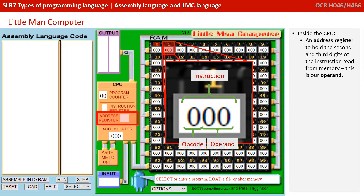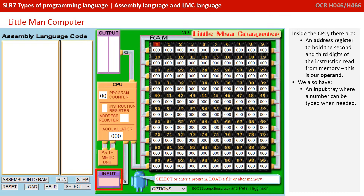An address register to hold the second and third digits of the instruction read from memory — this is our operand. We also have an input tray where a number can be typed if needed, and an output area where any numbers output will be printed.